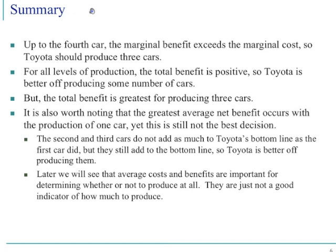We are still talking about the previous slide's table. Up to the fourth car, the marginal benefit exceeds marginal cost. The marginal rule is: as long as marginal benefit is greater than or equal to marginal cost, the producer should produce. For all levels of production total benefit is positive, so Toyota is better off producing some number of cars. But the total benefit is greatest when producing three cars.